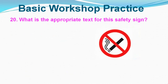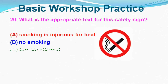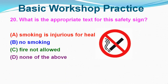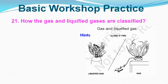Question No. 20: What is the appropriate text for this safety sign? Option A: Smoking is Injurious for Health, Option B: No Smoking, Option C: Wear Not Allowed, Option D: None of the Above. Correct answer is Option B, No Smoking. Now we shall discuss multiple choice questions on Fire and Fire Extinguisher.